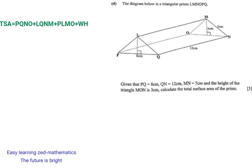So the area of rectangle PQNO equals 8 by 12. To find the area of PQNO, you multiply 8 by 12, which gives 8 × 12. Then plus 12 by 5 for rectangle LQNM on the right side — so LQNM equals 12 by 5. To get the area of this rectangle, you multiply 12 by 5.